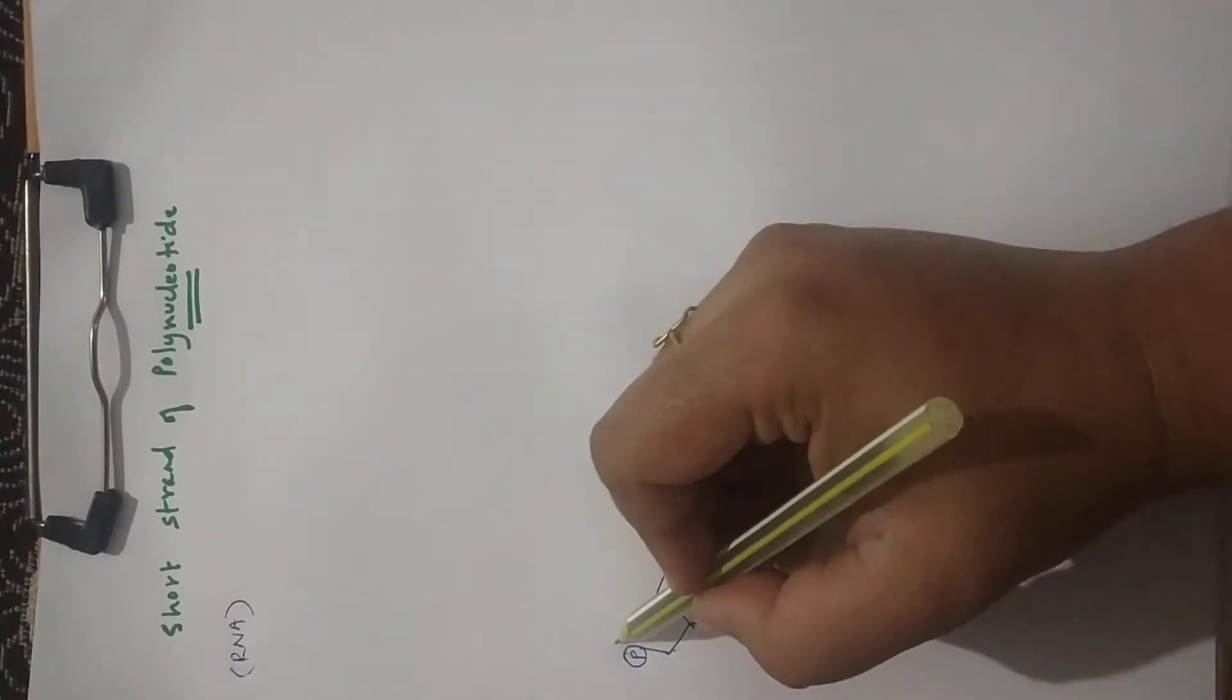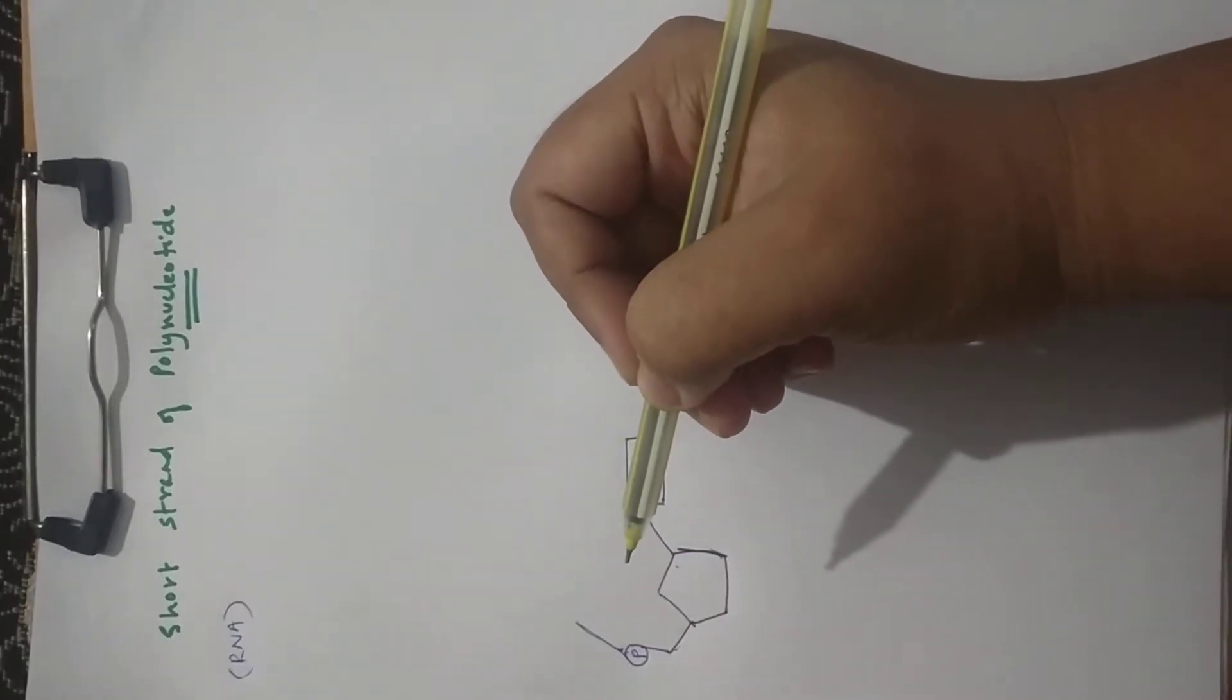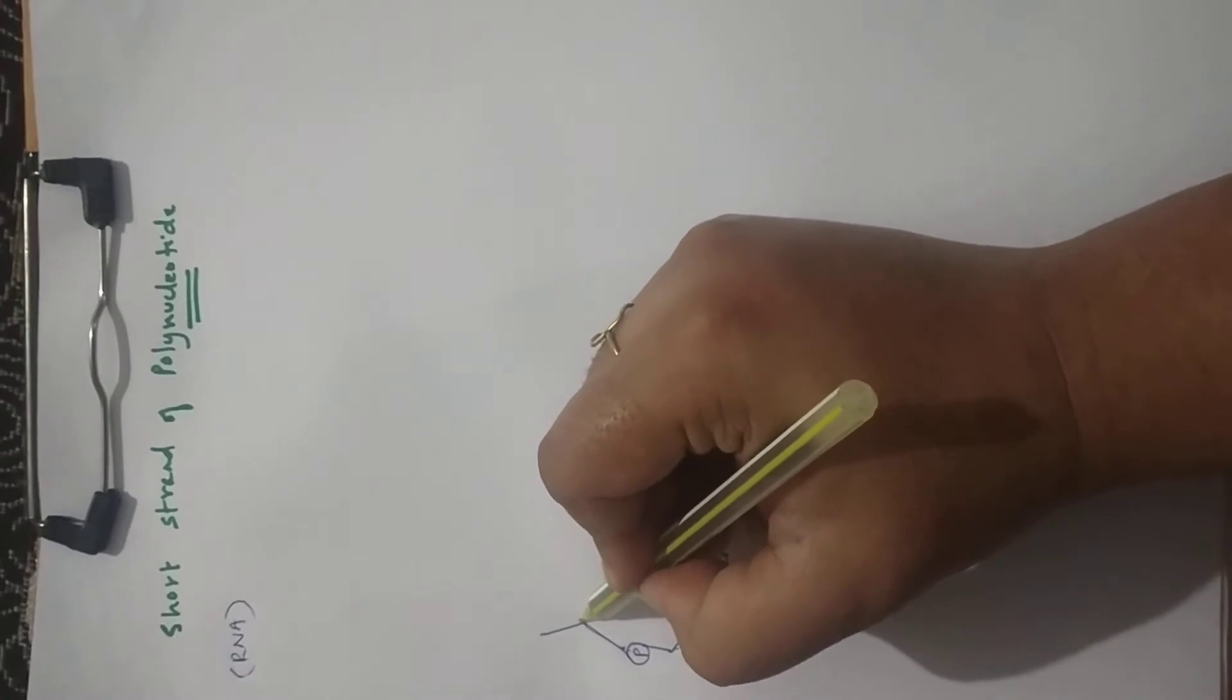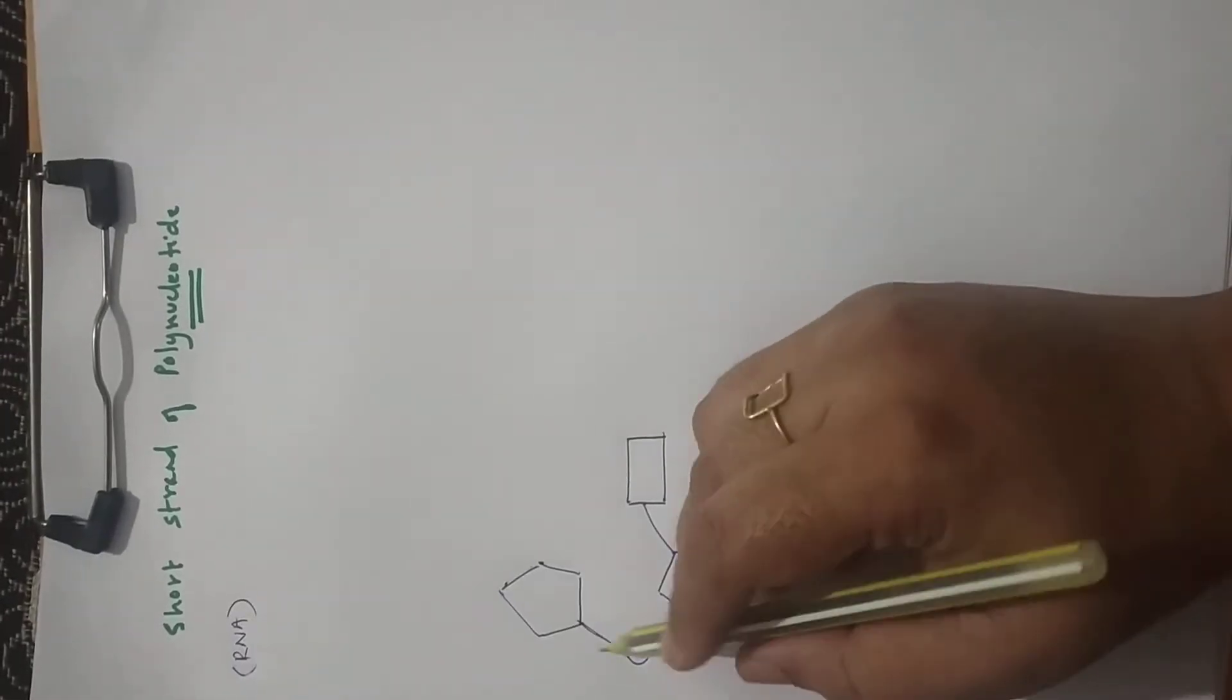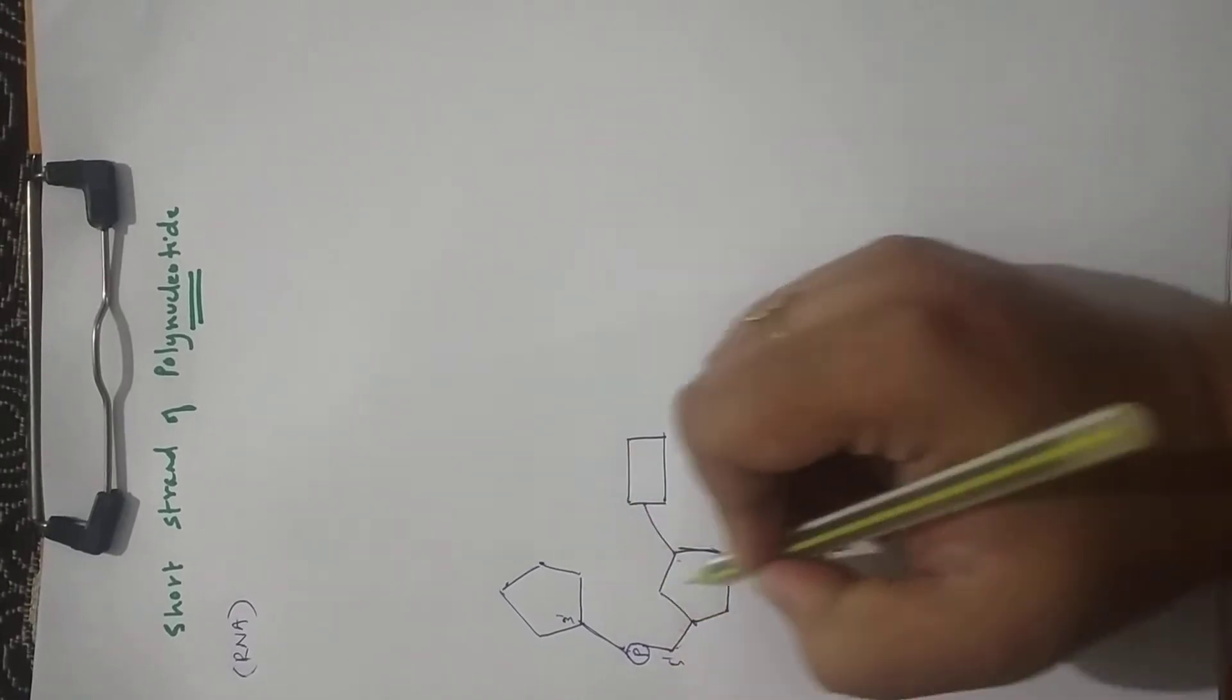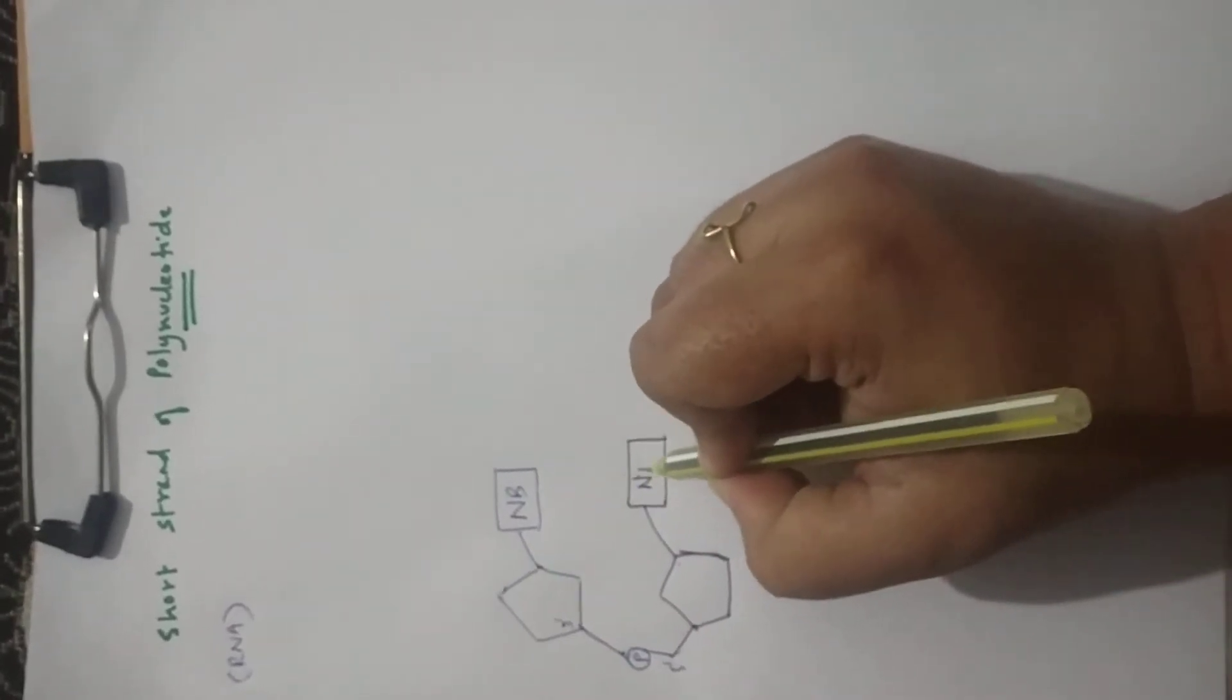Now this phosphate is going to make another phosphodiester bond with the next sugar, that is here in the 3' position. So remember this is the 3' position and this is the 5' position. Here is again nitrogenous base.